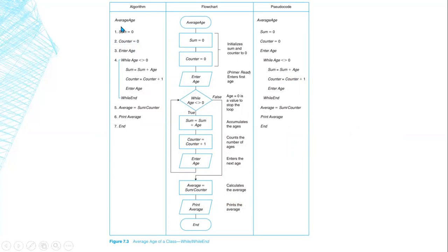Let's see how this problem can be solved using the algorithm. Our module is called 'average age.' First, we initialize variable sum to zero — we need to add all ages to sum. The counter is initialized to zero because we need to count how many students we enter. We enter the first age before the loop, and the loop will depend on the age. While the age is not equal to zero — since we don't have age equal to zero — the loop will keep going.